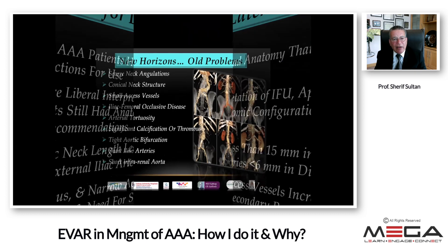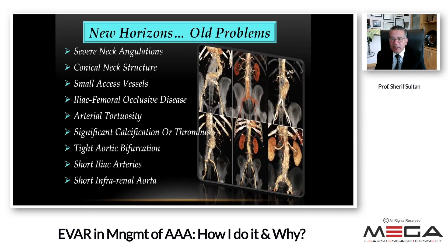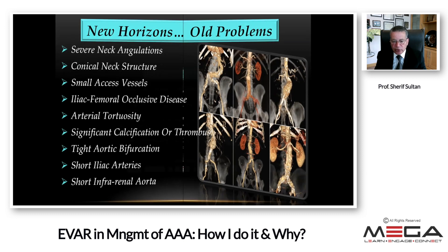Moreover, we have new horizons in technology, but the old problems haven't changed at all — from severe neck angulation to conical neck structure, small access vessels, iliac-femoral occlusive disease, arterial tortuosity, significant calcification or thrombus, tight aortic bifurcation, short iliac arteries, and short infrarenal aorta.